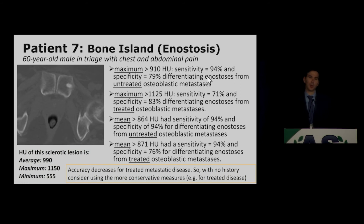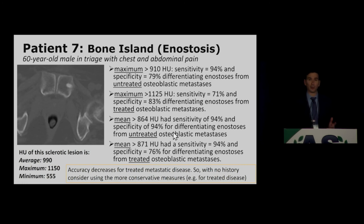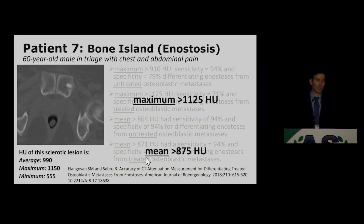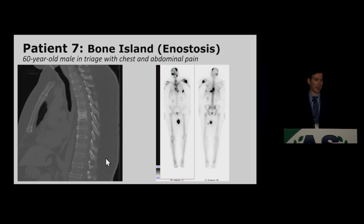Patient 7 highlights recent papers on differentiating bone islands from sclerotic metastatic lesions using Hounsfield units. At the workstation, a maximum Hounsfield unit value greater than 1125 or a mean greater than 875 is indicative of a bone island. You can fine-tune these values to your practice. This did end up being a bone island at long-term follow-up, even though this patient had a history of prostate cancer.